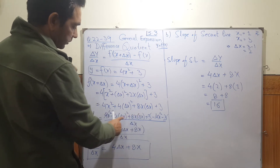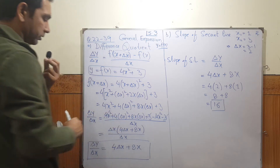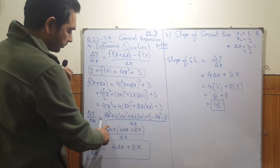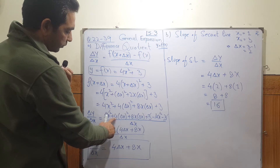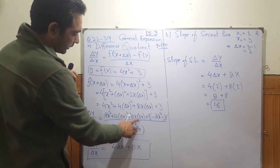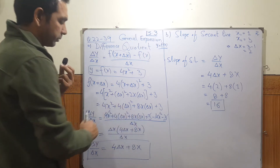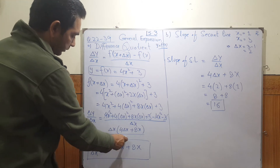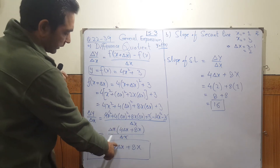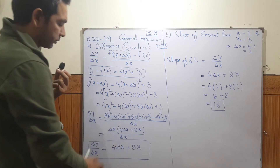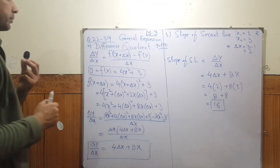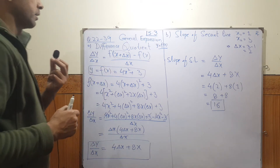We can see that delta x is a factor in both remaining terms — 4 delta x squared and 8x delta x — so we take delta x common. We're left with 4 delta x and 8x inside the bracket. This delta x cancels with the delta x in the denominator, leaving 4 delta x plus 8x, which is the general expression for the difference quotient.